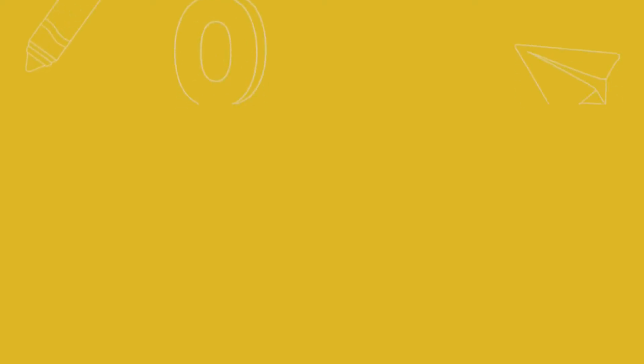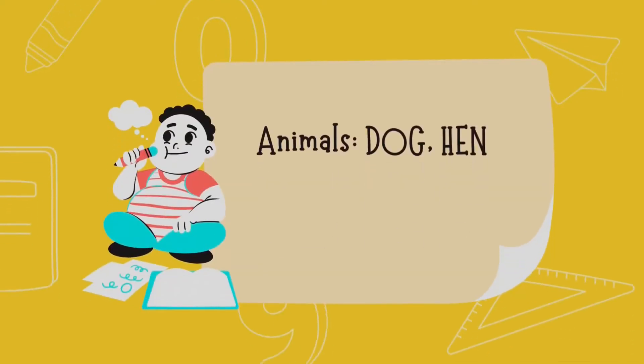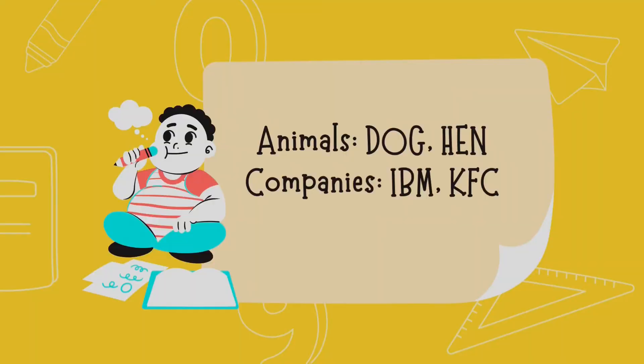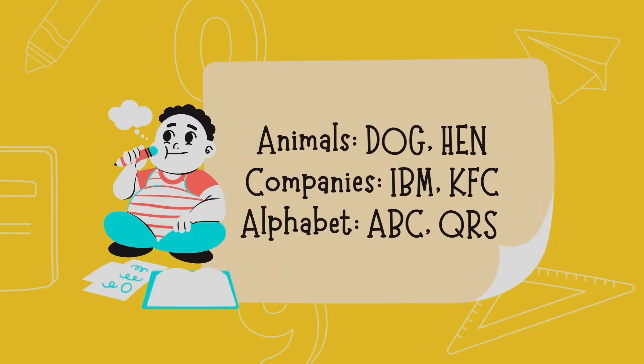If you did, did you use any special tricks? It's difficult, right? One thing you can try to do is chunk the letters into groups by theme. For example, you could have a category of animals, so with the letters you have you can make DOG — D-O-G — and HEN — H-E-N. Then you can have a group of companies: IBM and KFC. And lastly, this set of letters you could chunk into alphabet, so you have A-B-C and Q-R-S.